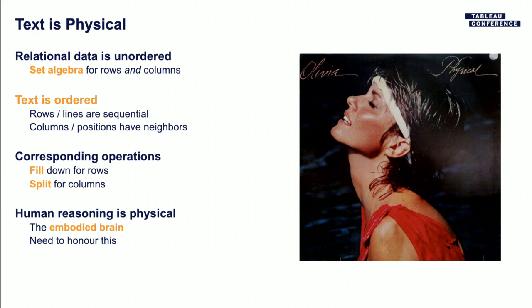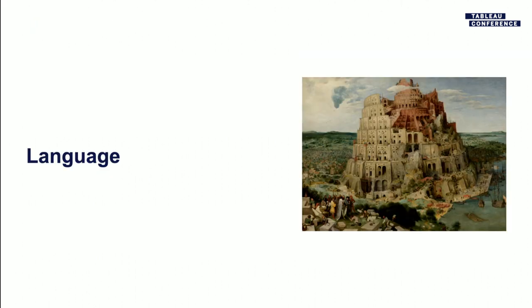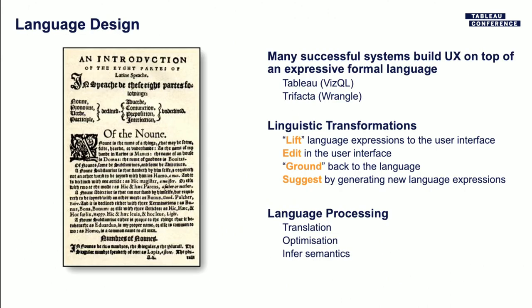So how do you go about building a system like that? The first step is you want to have a language. That seems a little excessive, but it turns out there are many very successful systems built on an expression-based formal language. Tableau is a prime example — you've heard of VizQL, which is actually a language that we can manipulate. Trifacta has a language called Wrangle. Other systems do this too.